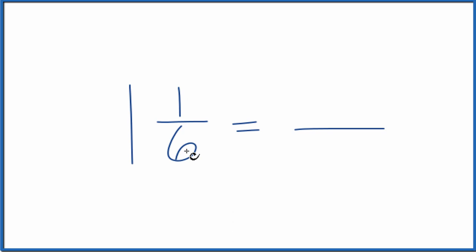1 times 6 is 6, plus 1 is 7. 7 goes up here on top for our numerator. Then we just bring the 6 across.